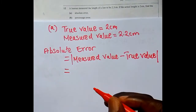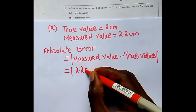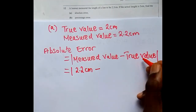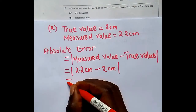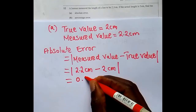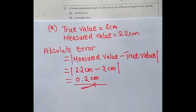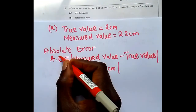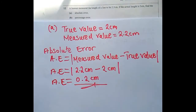Substituting the values, we take the measured value of 2.2 centimeters and subtract the true value of 2 centimeters. The difference between these two values is 0.2 centimeters. So the absolute error (AE) is equal to 0.2 centimeters.